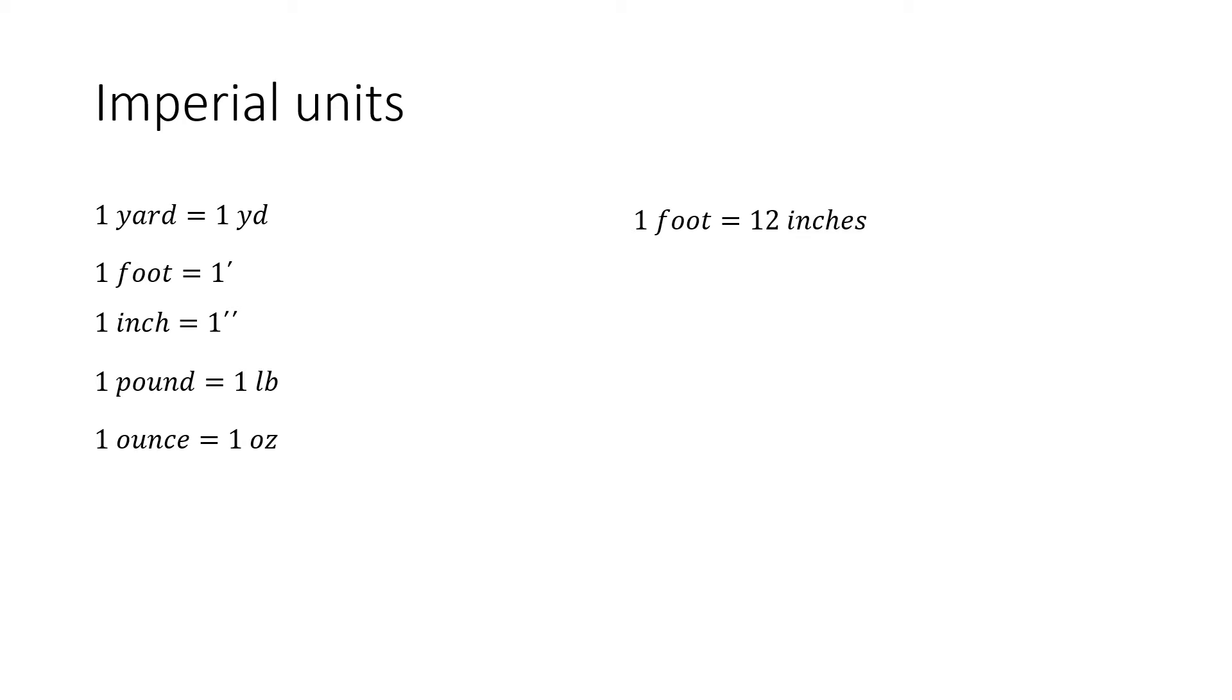Now, conversion of imperial units among themselves. One foot has got 12 inches. One gallon has got 8 pints. And one mile is 1760 yards. And one pound equals 16 oz. One yard has got 3 feet. So on the right side, they are conversion among the imperial units.